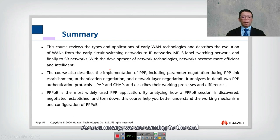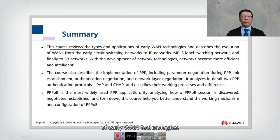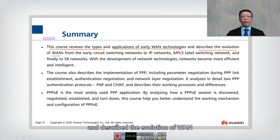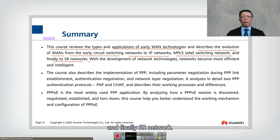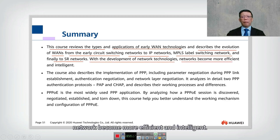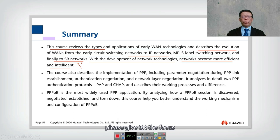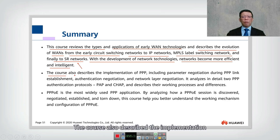As a summary, this course reviewed the types and applications of early WAN technologies including PPP, HDLC, ATM, and Frame Relay, and described the evolution of WAN from early circuit-switching networks to IP networks, MPLS label-switching networks, and finally segment routing networks. With the development of network technology, networks become more efficient and intelligent. Segment routing is expected to be a key technology in the future.